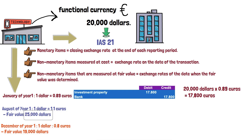Therefore, in August of year 1, we will show the change effect on the fair value of the investment property. To carry out this operation, we know that the fair value at this date amounted to 25,000 dollars. However, we must review the exchange rate to recognize the translation from dollars to euros.